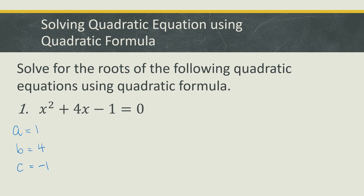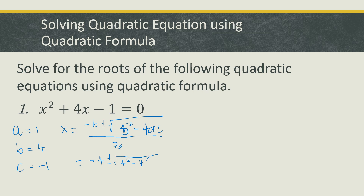We substitute the values into the formula: x is equal to negative b plus or minus the square root of b squared minus 4ac, all over 2a. Substituting: we have negative 4 as the b value, plus or minus the square root of 4 squared minus 4 times a, which is 1, times c, which is negative 1, all over 2 times a, which is 1.